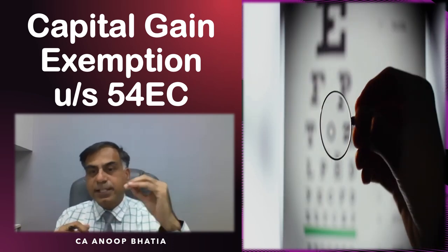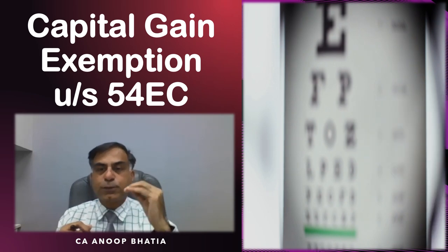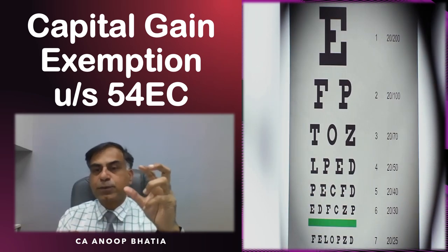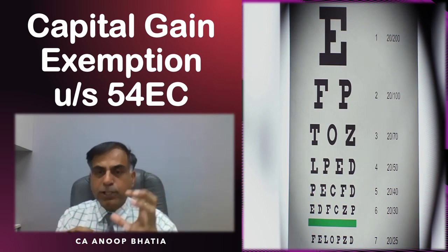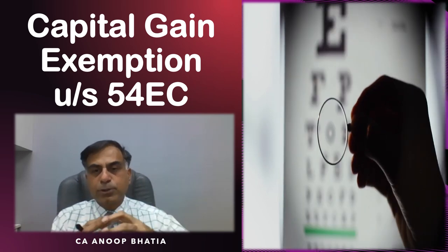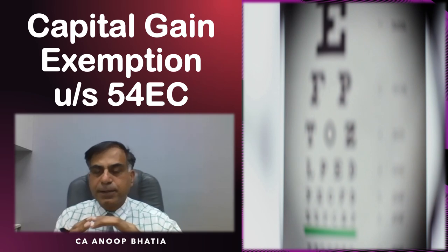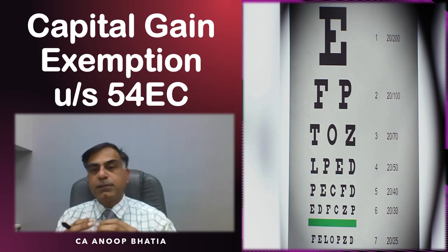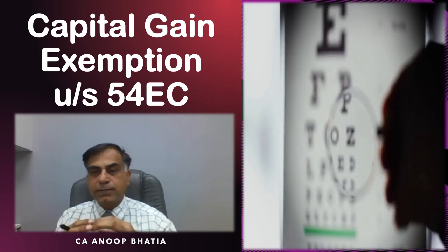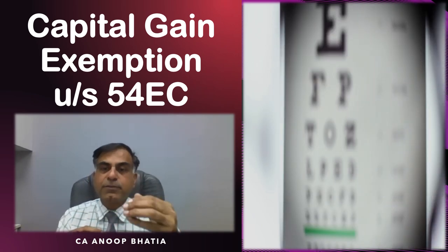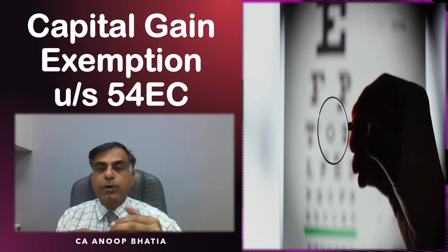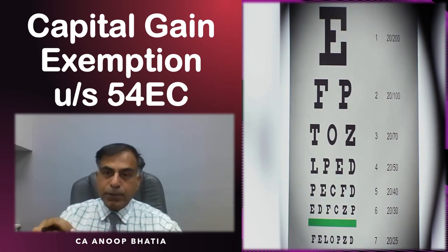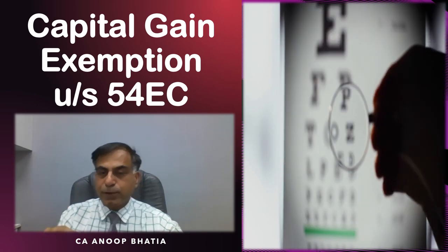In this series, in this list of Section 54 to 54GB, there is a very important section called Section 54EC. If somebody wants to save the capital gain tax liability, they need to purchase certain bonds. What this scheme of purchasing bonds is, and what are the various points which as an investor you should take care of while seeking capital gain exemption — through this video I am trying to put up all these points for the benefit of the public.